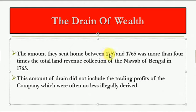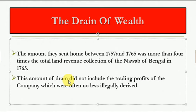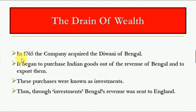The amount these servants sent home between 1757 and 1765 was more than four times the total land revenue collection of the Nawab of Bengal in 1765. This amount of drain did not include the trading profits of the company, which were often no less illegally derived.